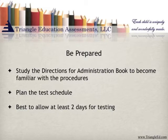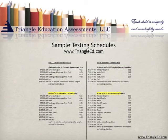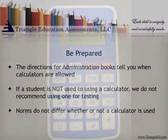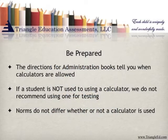Plan the test schedule. It's best to allow at least two days for testing. The sample schedule in the directions for administration book or the one on our website give guidelines for average times students take, but the Stanford is untimed as long as the student is working productively. Students can use calculators for certain math sections. The directions for administration books tell you when a calculator is allowed. If a student isn't used to using a calculator, we don't recommend it for test taking.